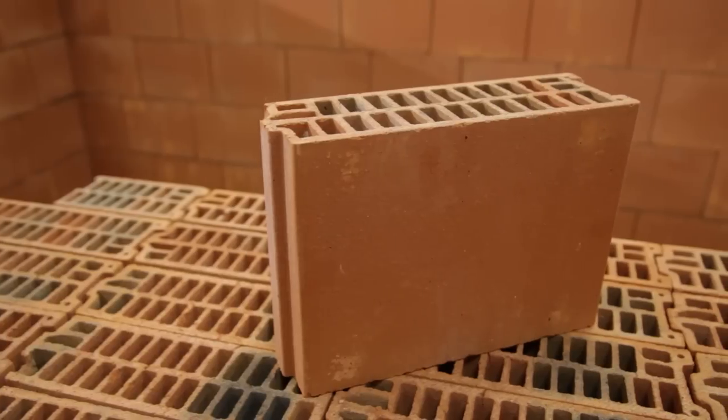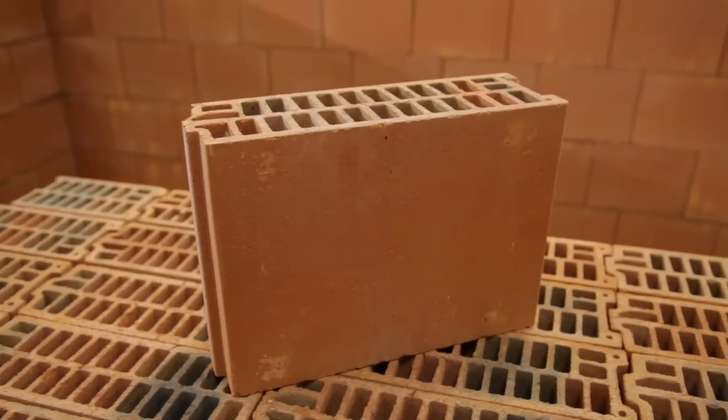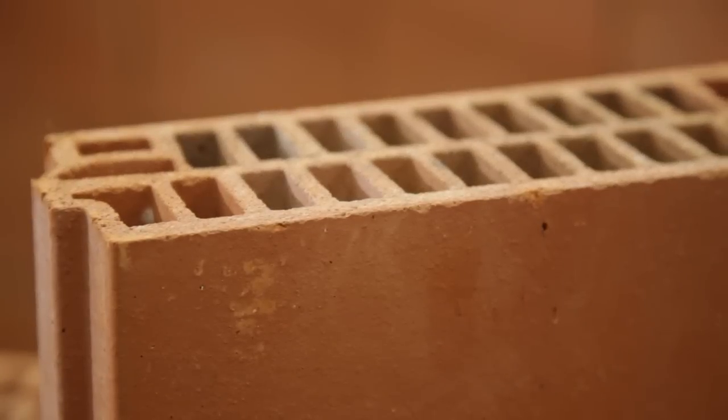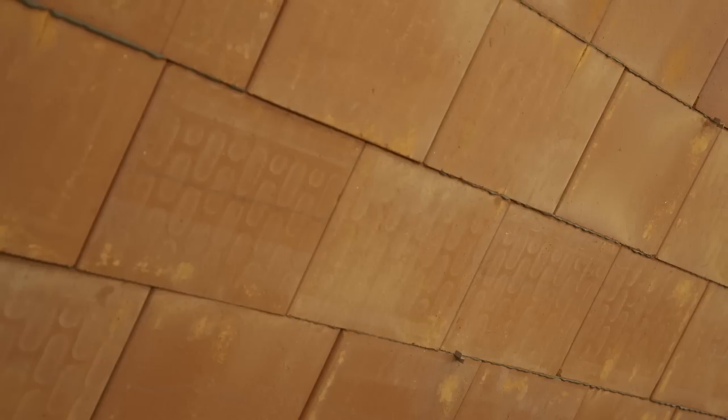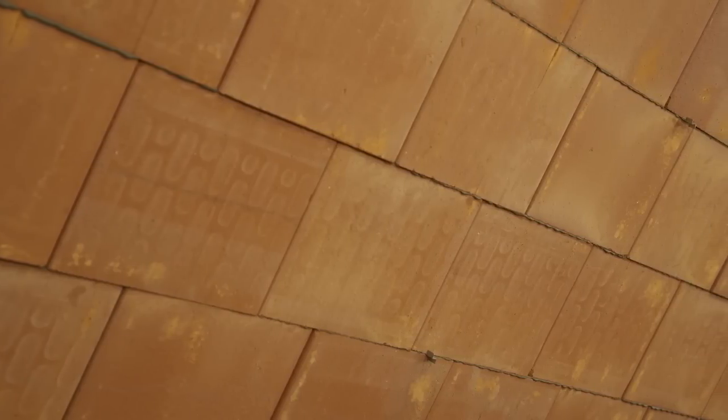The blocks are generally lighter than concrete. Compressive strengths of Porotherm's core range are typically 10 newtons per millimeter square. There are no flushing of joints required.